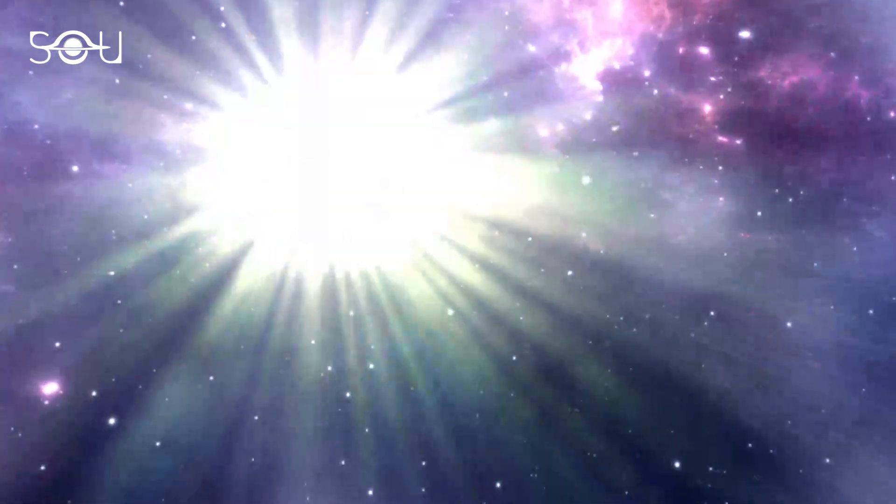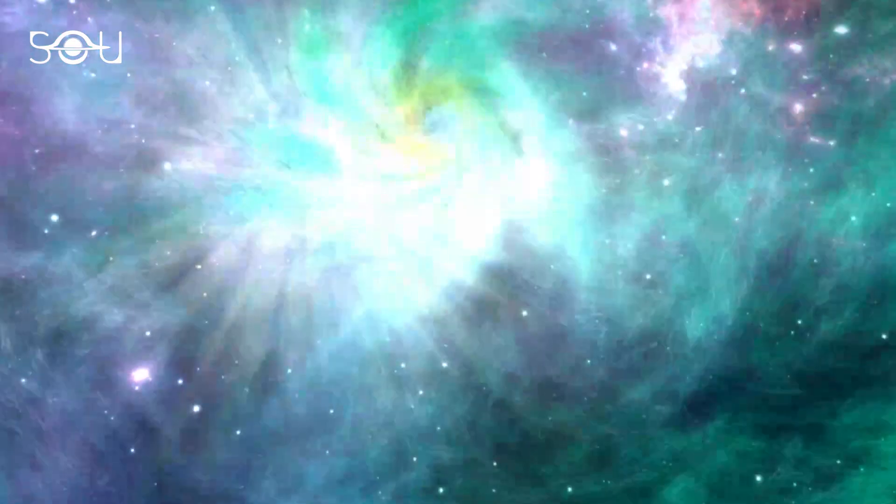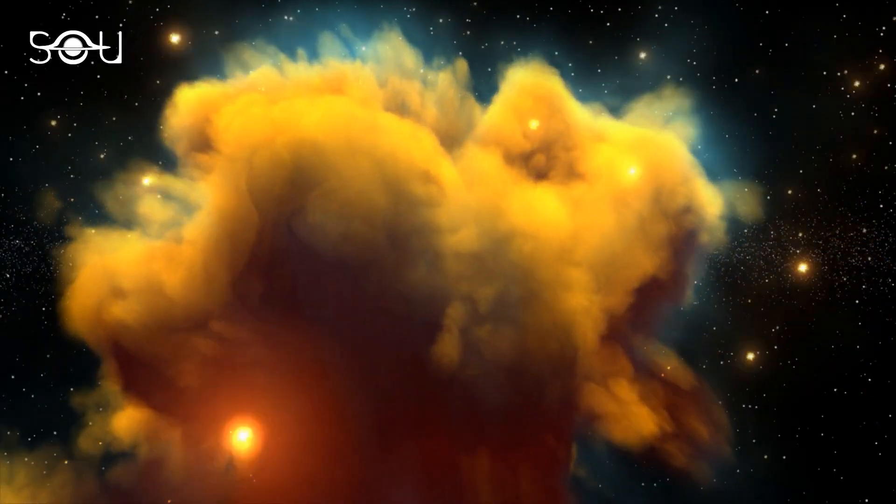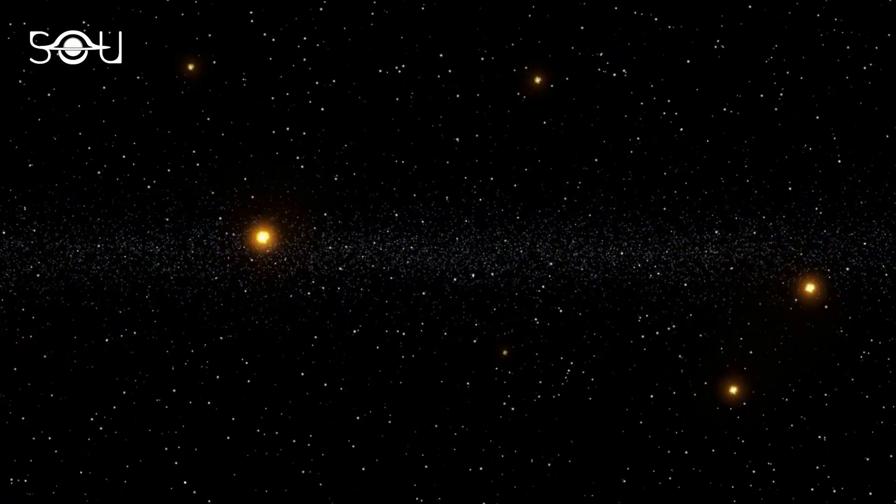So when the supernova shockwaves shed the debris, heavy elements like gold are dispersed in the interstellar dust, which further condenses to form planets and other structures. This is probably one way how gold became a part of our planet.